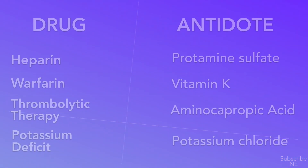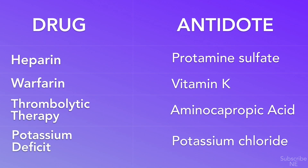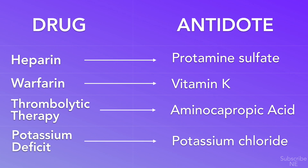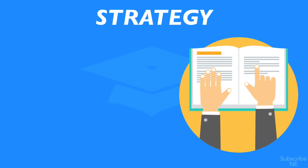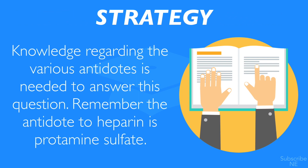In our question, we are presented with four options. Each one is an antidote to a specific condition. Protamine sulfate is the antidote for heparin. Vitamin K is the antidote for warfarin. Aminocaproic acid is the antidote for thrombolytic therapy. And potassium chloride is simply administered in cases of potassium deficit. Knowledge regarding the various antidotes is needed in order to answer this question.